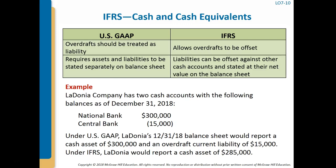In general, cash and cash equivalents are treated the same under IFRS and GAAP. One difference relates to bank overdrafts, which occur when withdrawals exceed the available bank balance. U.S. GAAP requires overdrafts to be treated as liabilities, whereas IAS No. 7 allows bank overdrafts to be offset against other cash accounts when overdrafts are payable on demand and fluctuate as part of normal cash management. For example, Ladonia Company with two accounts under GAAP would report a cash asset of $300,000 and an overdraft liability of $15,000, while under IFRS it would report a net cash asset of $285,000.